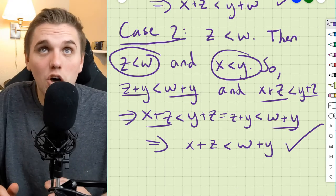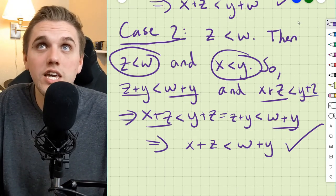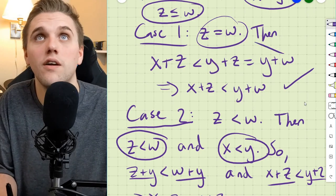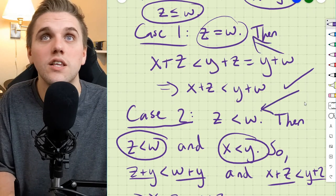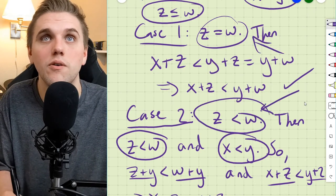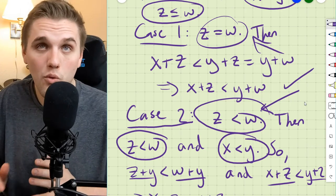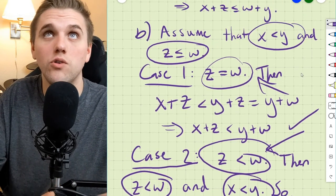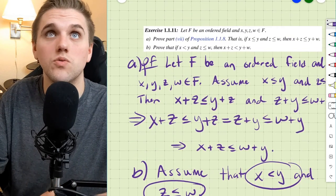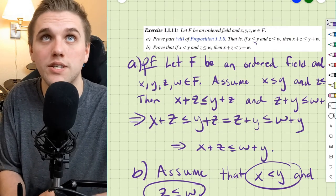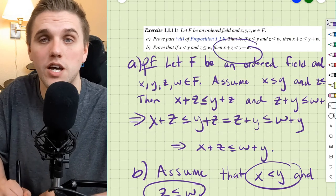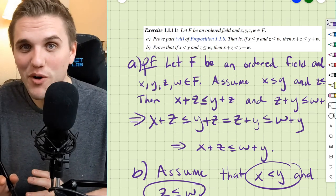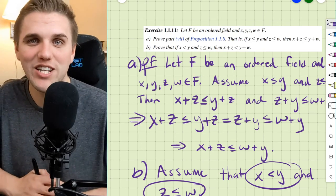So regardless of whether z equals w or z is strictly less than w, either way the conclusion holds — x plus z is less than w plus y. Thanks everyone, and I'll see you all in the next video.